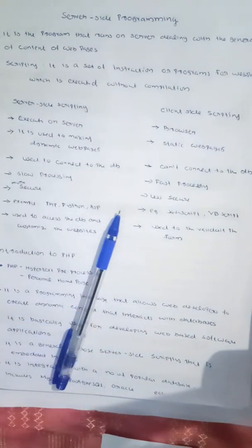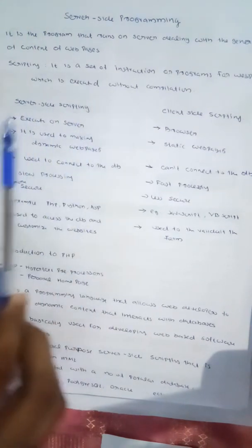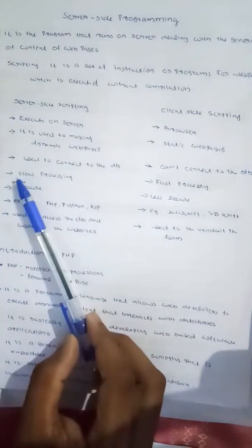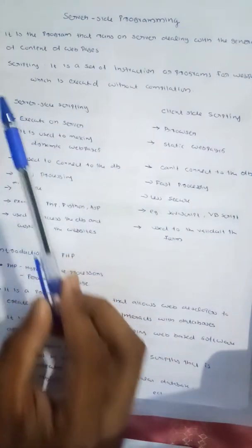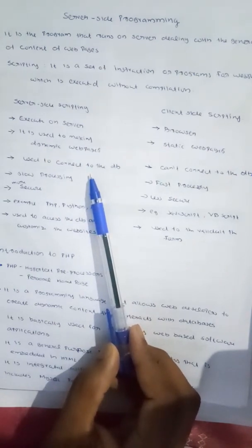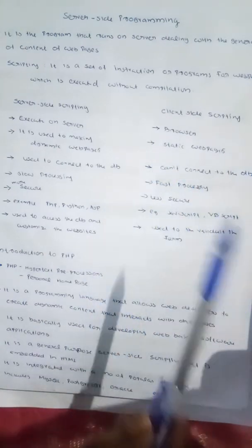In a static web page, the content remains the same. In a dynamic web page, the content changes. Dynamic web pages are created using server-side scripting, while static web pages are created using client-side scripting. Server-side scripting is used to connect to the database and store data.